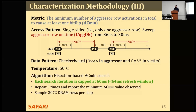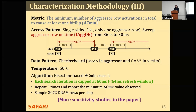We use a bisection-based algorithm to search for AC min, and we cap each search iteration at 60 milliseconds, which is strictly smaller than the refresh window, to avoid seeing any undesired retention failures. This is enough to explain our results shown in the presentation, and we have many more sensitivity studies in the paper.